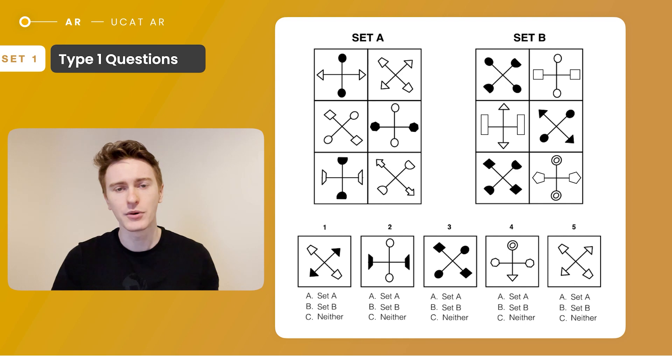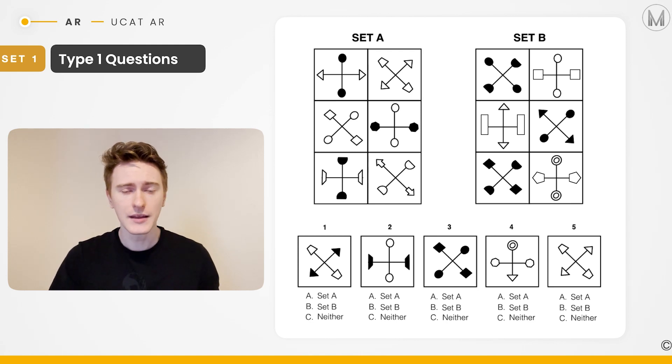Here's an example of a type one question now. Pause the video and have a go for yourself. Going through it together, the important thing to recognize is that we've got set A, set B, and then we've got a series of test shapes. Let's focus on set A first of all. You can see instantly that these patterns are organized into either plus shapes or cross shapes. That's an important observation and it's not one that you should overlook.